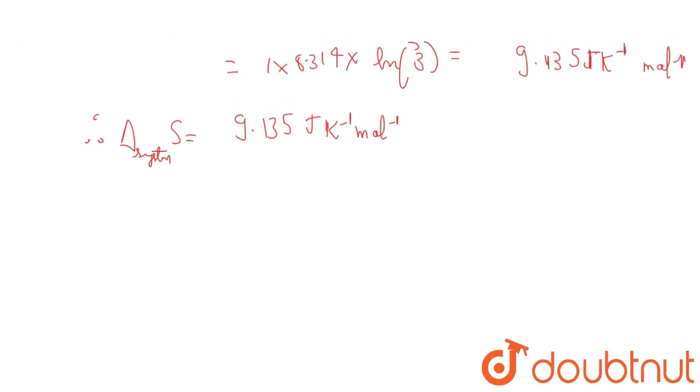For a reversible process, delta S of surrounding equals negative delta S of system, which is -9.135 J K⁻¹ mol⁻¹.